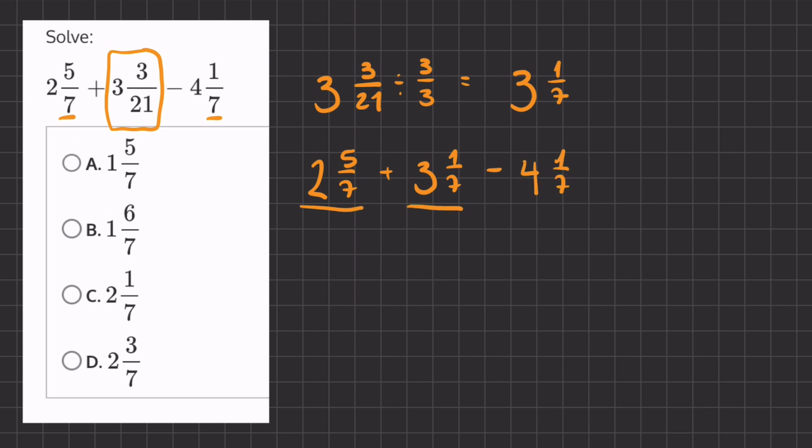Now let's start out with our first two fractions. Let's add the whole numbers together, we'll get 5, and now let's add our partial fractions. So we have 5 plus 1, which is 6, and we'll keep our common denominator of 7.